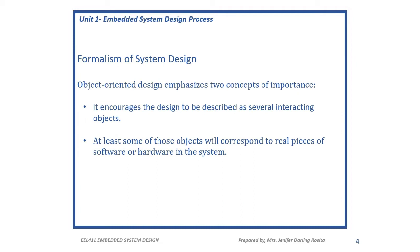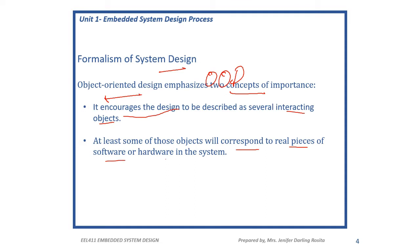The formalism of system design adds the concept of object-oriented design, which emphasizes two important concepts. First, it encourages designs to be described as several interacting objects. Second, at least some of those objects will correspond to real-time pieces of software as well as hardware in the system.